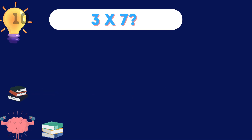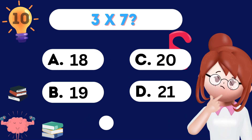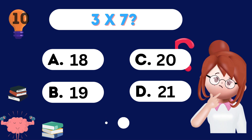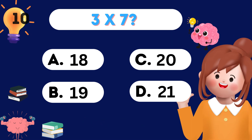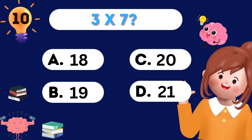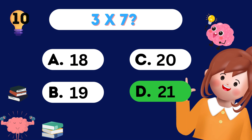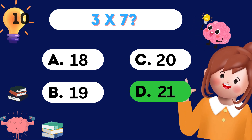What's 3 times 7? 3 times 7 is 21. Hooray!